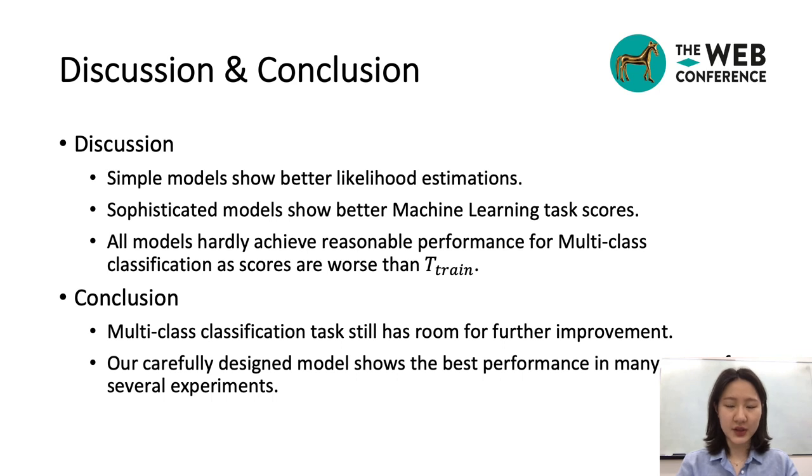As you saw on the last slide, simple models like PRIVBN and TVAE show better performance on the likelihood estimation, while sophisticated models like TGAN and OCTGAN do better on machine learning tasks like classification, regression, and clustering. OCTGAN outperforms others on almost all cases, regardless of tasks, except for multi-class classification tasks, like cover type and intrusion. All methods are not good enough for the multi-class classification task, which means it should be studied further.